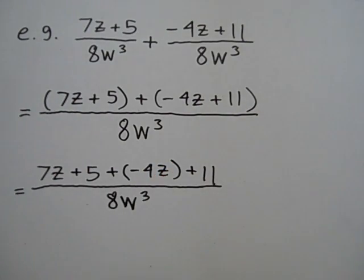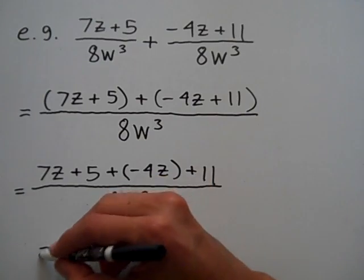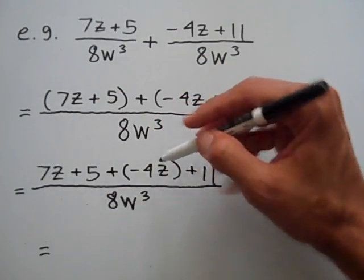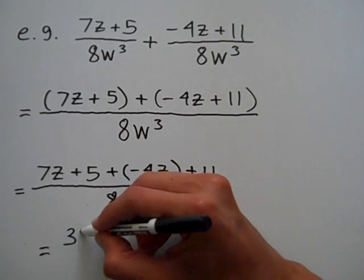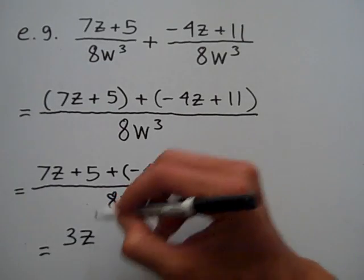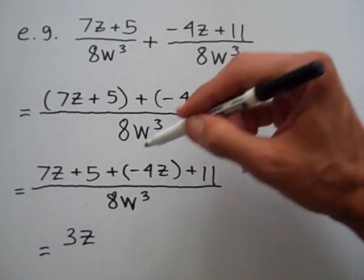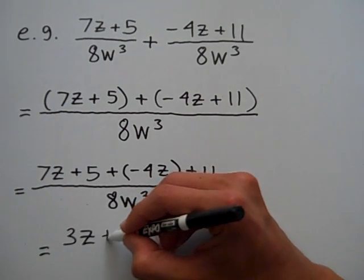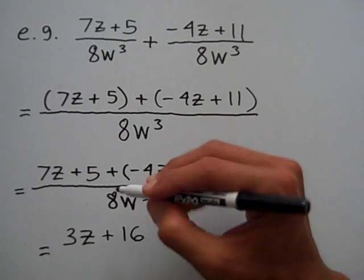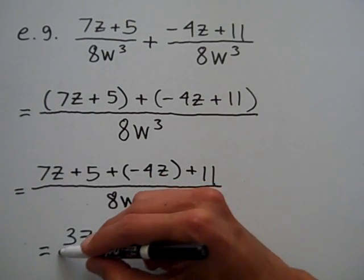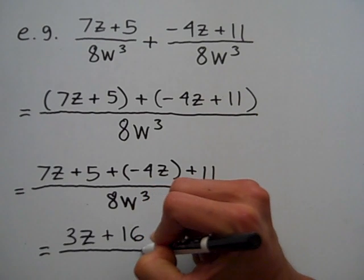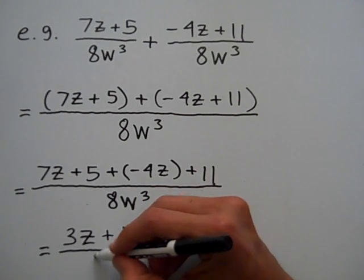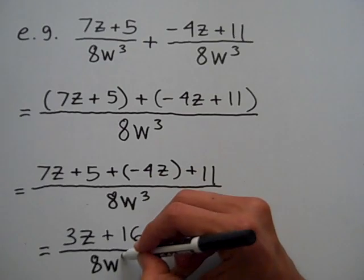Cleaning up the numerator, 7z plus negative 4z is 3z, combining these two like terms. And combining 5 and 11, I get 16. So 3z plus 16 is the numerator, and the denominator is still 8w cubed.